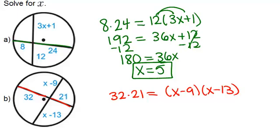So 32 times 21 is 672. And on the right, we have a binomial times a binomial. So you can use FOIL or perhaps a rectangle model in order to multiply those. And you'll get X squared minus 22X plus 117.